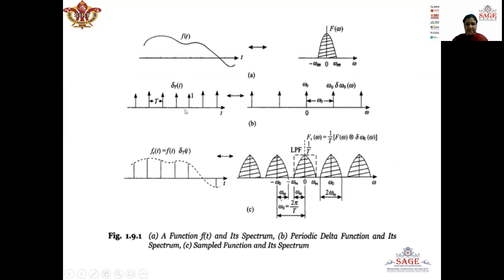This train of impulses is a periodic signal having a time period of capital T. When we find the Fourier transform to plot its frequency spectrum, we already know that the Fourier transform of the Dirac delta function is itself. So when we find the Fourier transform of this train of impulses we will get a train of impulses in the frequency domain with an interval of omega_naught between each impulse. We represent the Fourier transform of delta_T(T) as omega_naught times delta(omega_naught, omega), meaning the interval between impulses is omega_naught and the amplitude of each impulse is omega_naught.